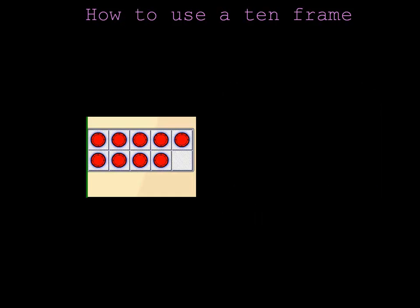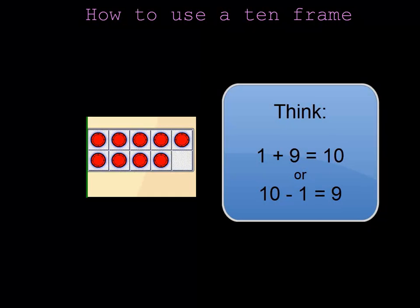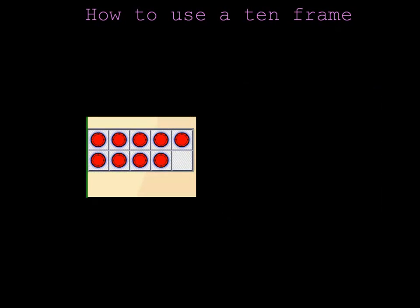This 10 frame has 9 chips. I can tell without counting because there is only one empty block. Now if there could be 10 chips on the 10 frame but only one is missing, then I know that there are 9 there because 1 plus 9 makes 10. Or another way of thinking of that is that 10 minus 1 is 9.